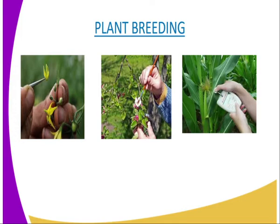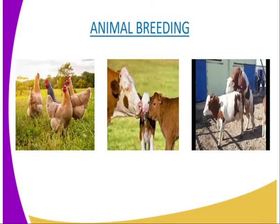Another example is in cattle. The Hereford, an English breed, contributes high beef production and quick maturation. The Boran from Kenya contributes disease resistance and the ability to feed and grow on dry pasture. A cross between a Hereford bull and a Boran cow yields a suitable hybrid with all these qualities.